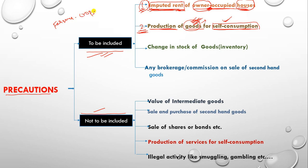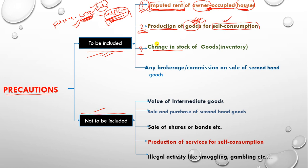For example, consider a farmer who produced crops, sold some in the market, and kept some for self-consumption. The value of the portion kept for self-consumption must be added. If he hadn't consumed it himself, he would have had to buy it from the market. This self-consumed stock becomes part of change in stock, which is a part of capital formation — also called investment — and investment is added to national income.